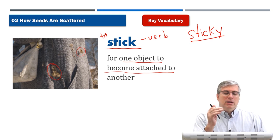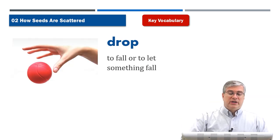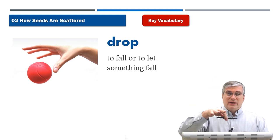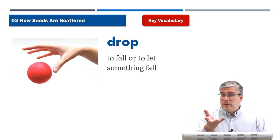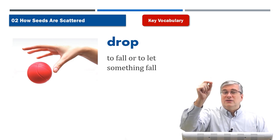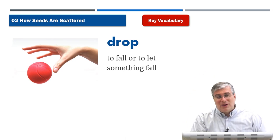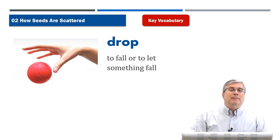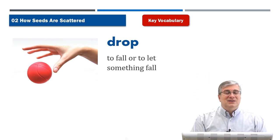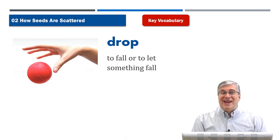'Drop' means to let something fall, or to fall by itself. When dandelion seeds are flying in the wind and the wind stops, the dandelion seed drops to the ground — it lands. To drop means to fall from a high place down to a lower place; it can also mean to land when the object ends up on the ground.